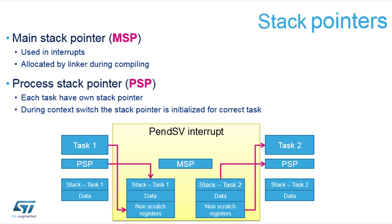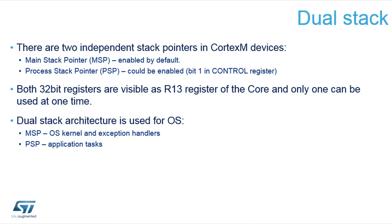The process stack pointer, however, is used whenever you run standard application code — so if you are out of all interrupts. The advantage is that it allows separation of the core of the RTOS, pointed to by the main stack pointer, from different tasks, which are pointed to by the process stack pointer. The stacks are independent, which minimizes the risk of overwriting the main stack for the core of the operating system. The dual stack model has to be switched on — it is an option for FreeRTOS. Normally when you boot the STM32, it starts with a single stack model where only the MSP is used for both standard application and interrupts.